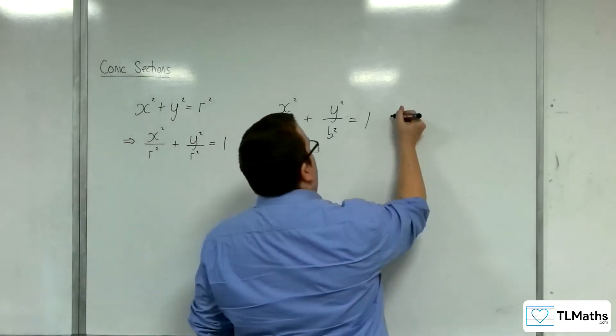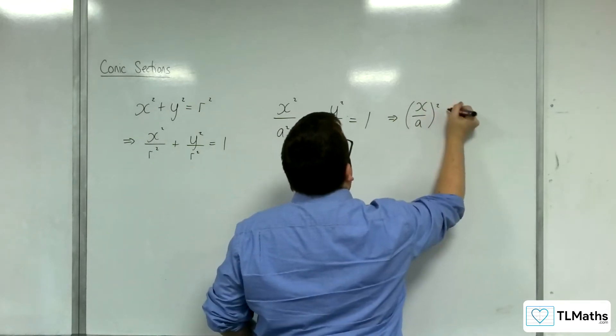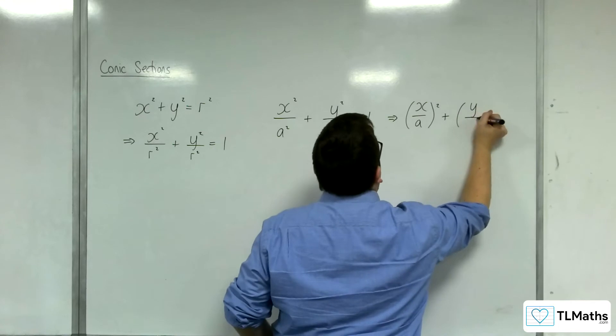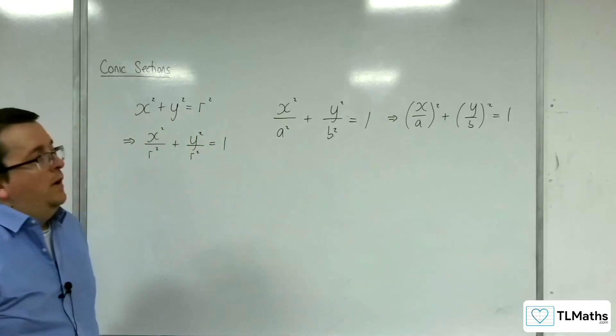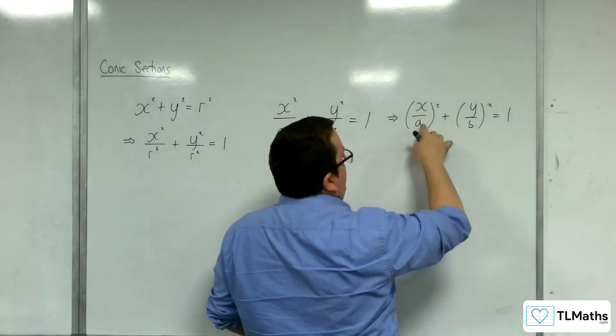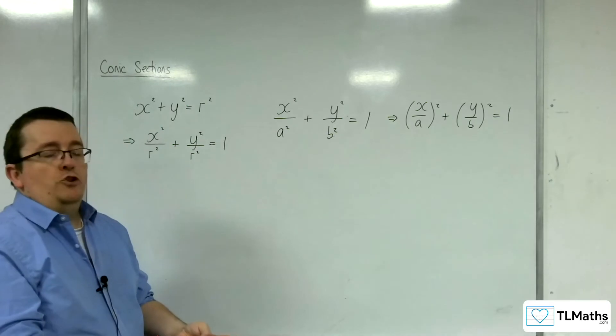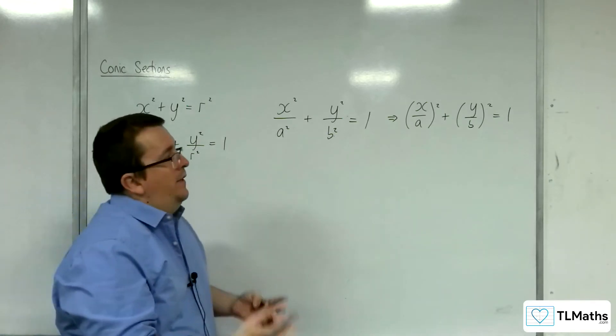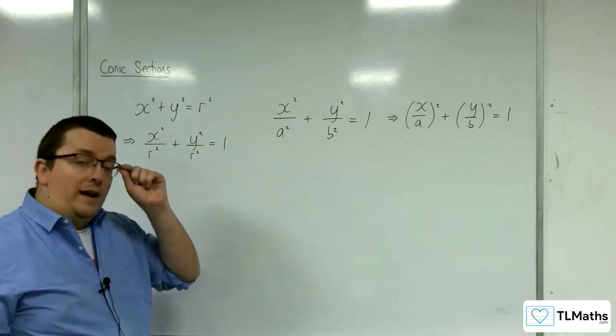Now, if you write that as x over a squared plus y over b squared equals 1, then you can see that this is like having x squared plus y squared equals 1, a circle centered at the origin with radius 1, that has been stretched parallel to the x-axis and parallel to the y-axis.